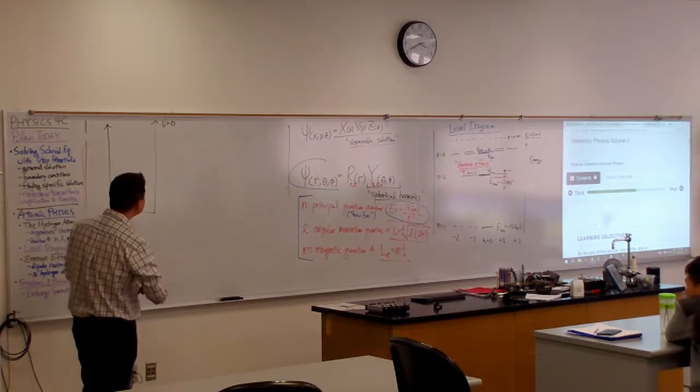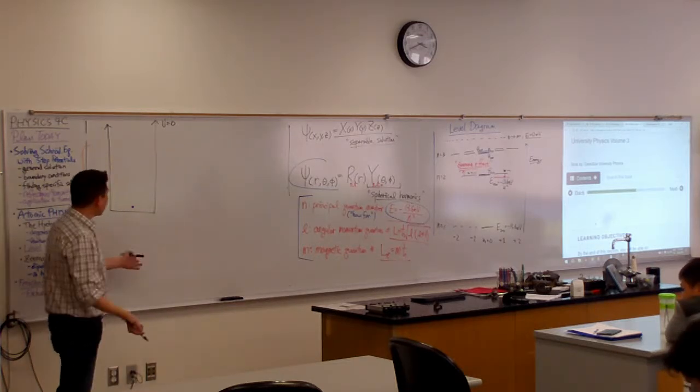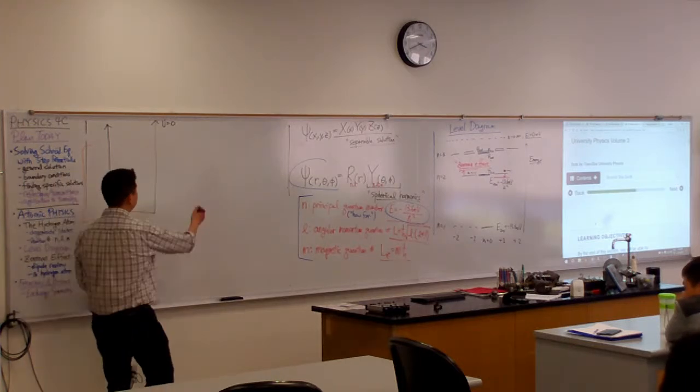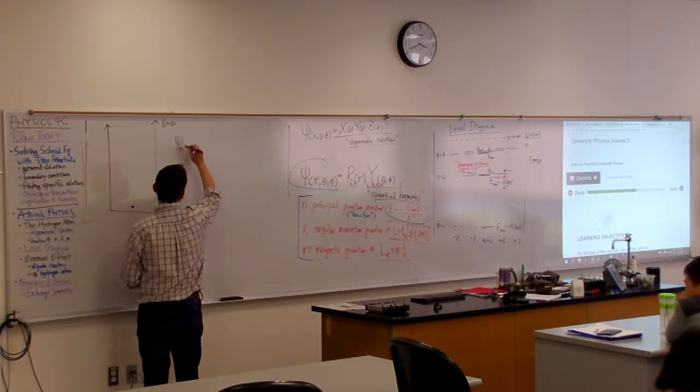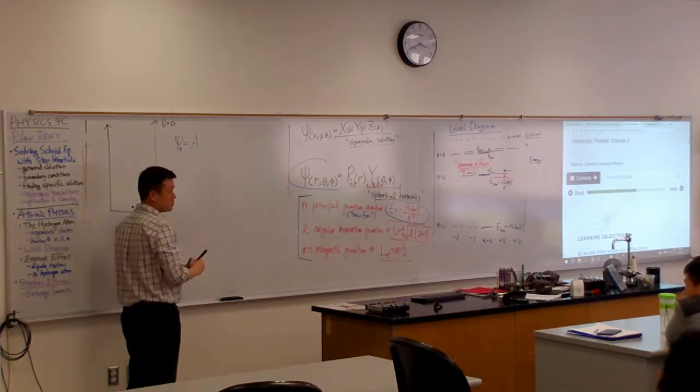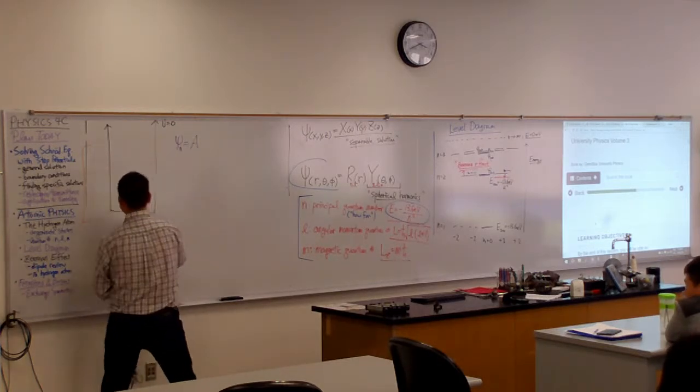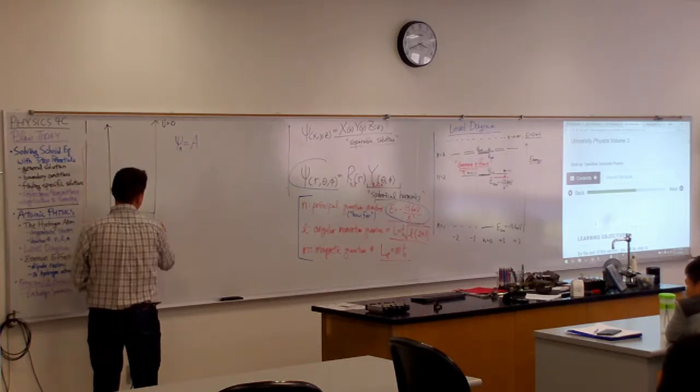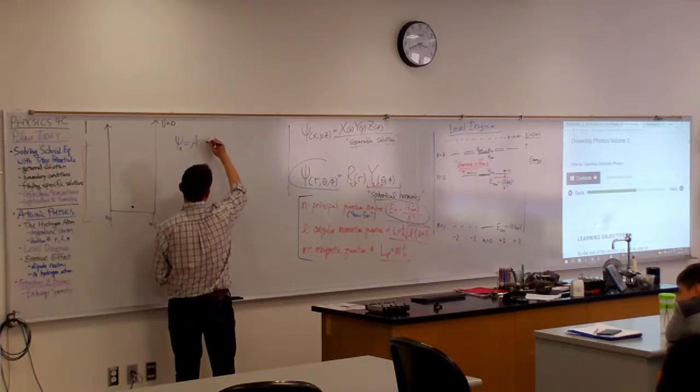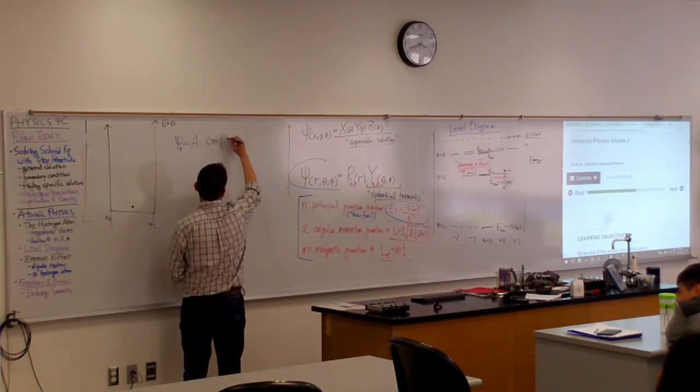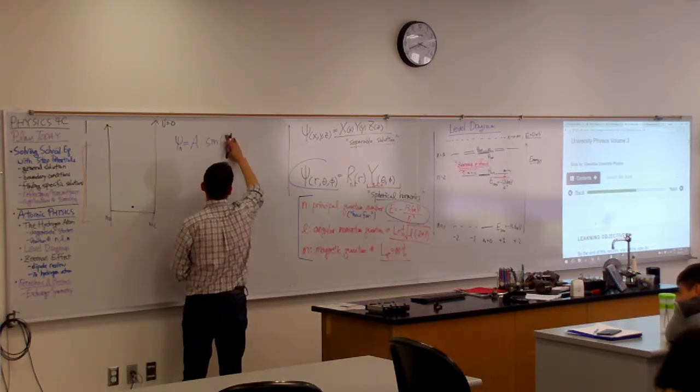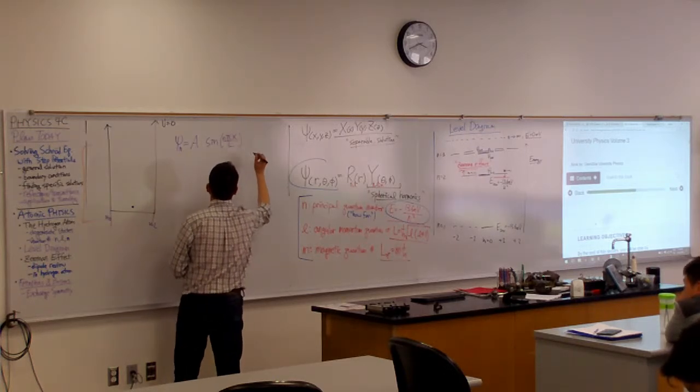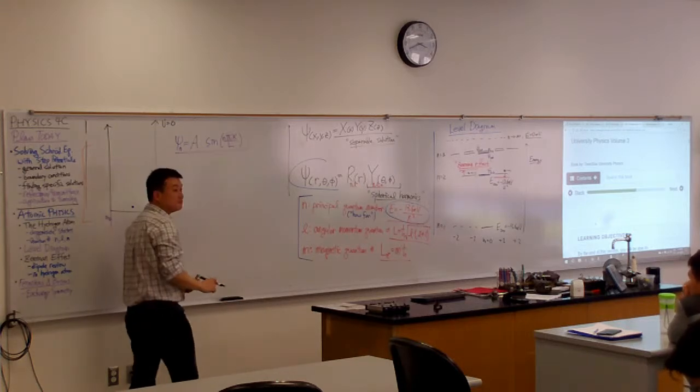So if we have a single particle, then you know what kind of states this single particle can have, right? You've seen this before? Psi n is equal to some normalization constant times, so let me define my coordinate axis, x equals zero here, x equals L here, this is A times the sine of n pi x over L. Right? Remember that?